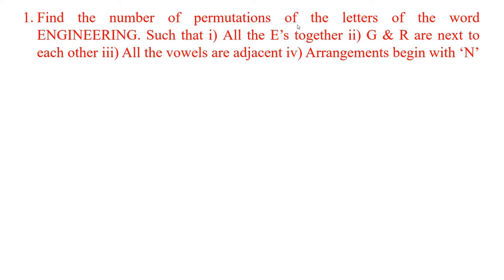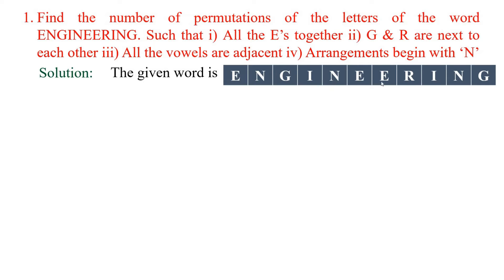The problem is: find the number of permutations of the letters of the word ENGINEERING such that: (1) all E's together, (2) G and R next to each other, (3) all the vowels are adjacent, (4) arrangements begin with N. Instead of the word ENGINEERING, any word like mathematics, chemistry, or English can be asked. The given word is E-N-G-I-N-E-E-R-I-N-G, which contains 11 letters. I am going to denote that value as N, so N = 11.